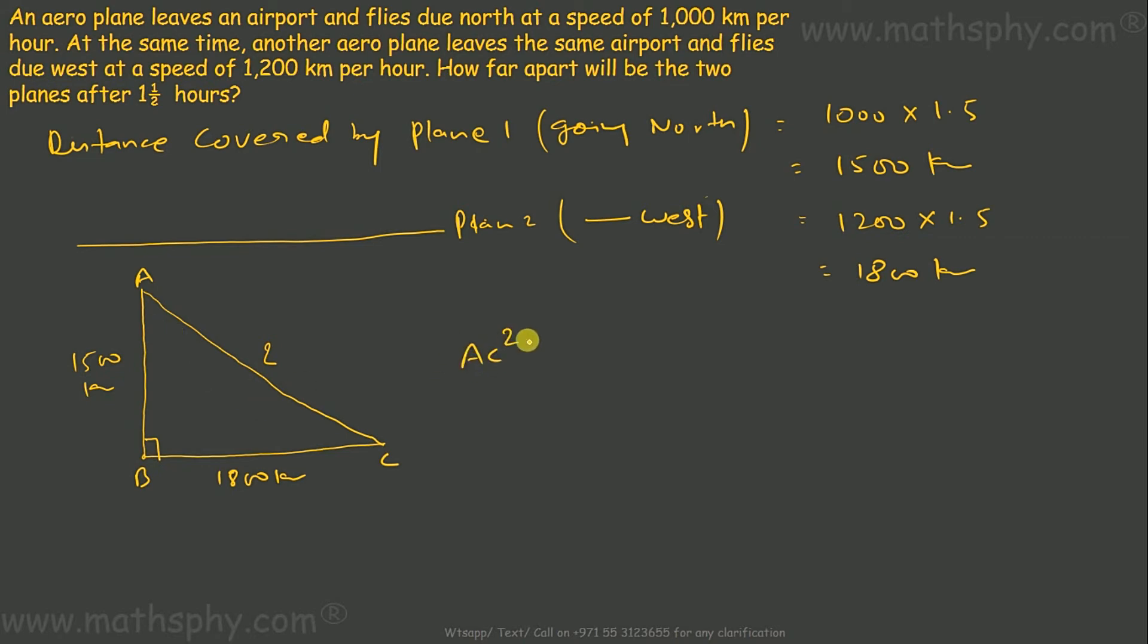So AC square will be AB square plus BC square. This gives you 5,490,000, so AC would be square root of 5,490,000.